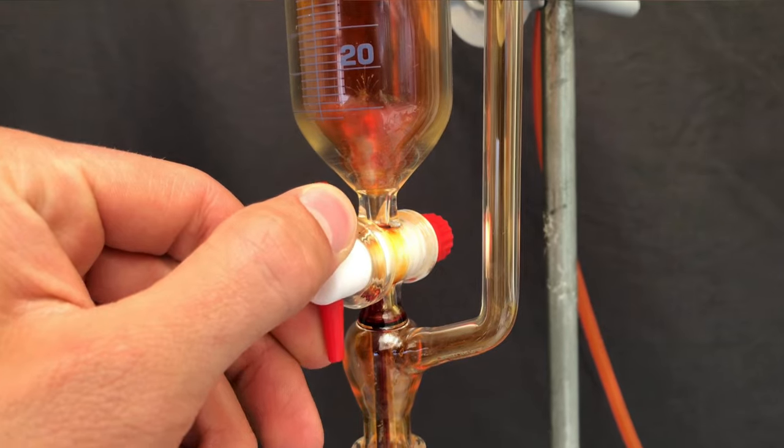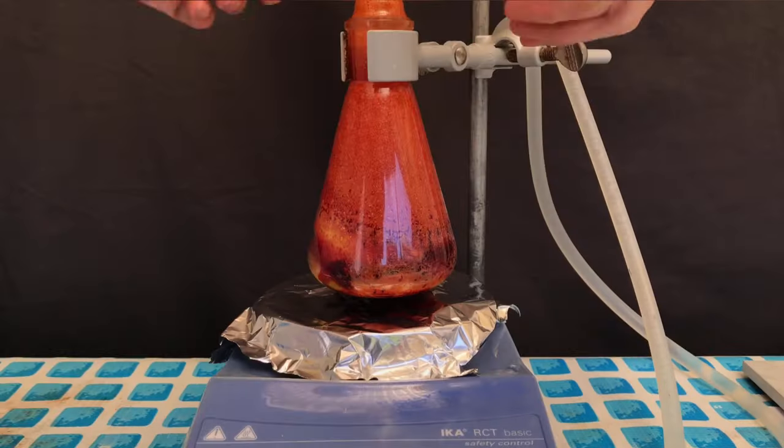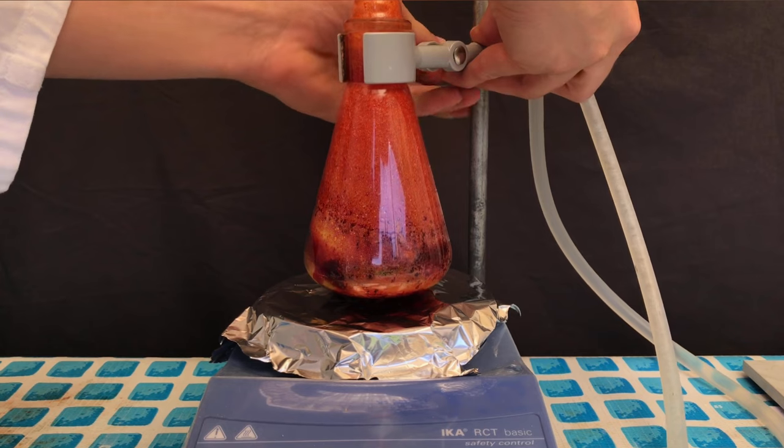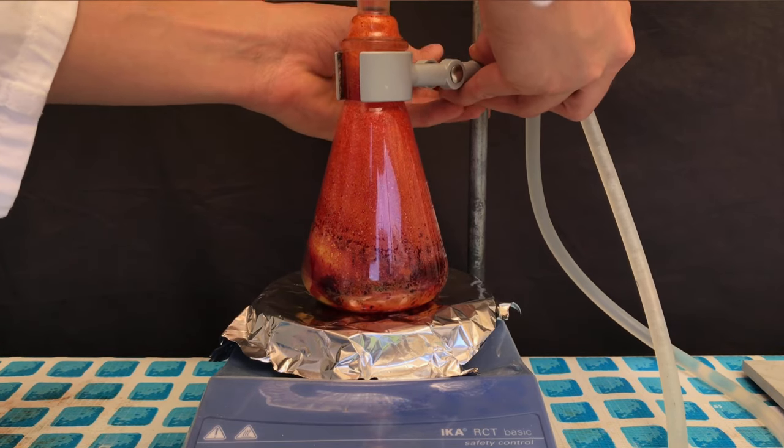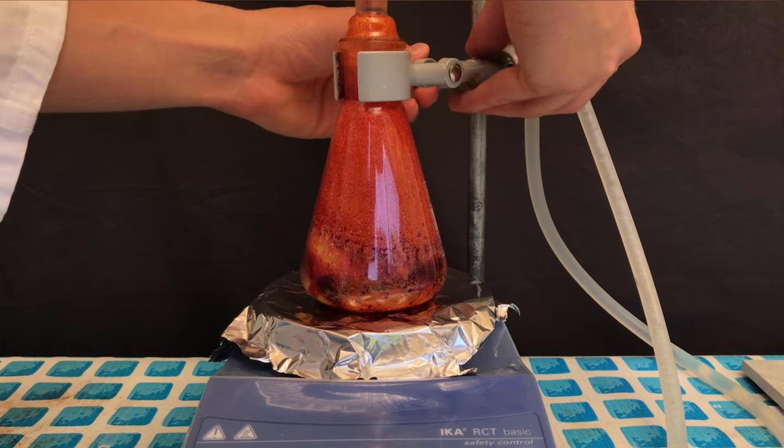In the flask, we now have a mixture of phosphorus tribromide, phosphorus pentabromide, elemental phosphorus, and leftover bromine. Our goal is not to have a mixture of this, but only phosphorus tribromide.